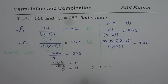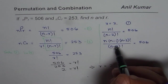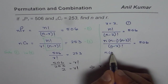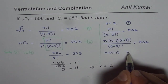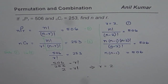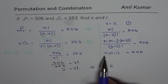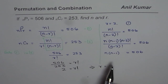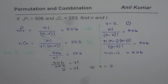N minus 2 factorial cancels, so we are left with N times N minus 1 equals 506. So 506 is N times N minus 1 — that is two consecutive numbers when multiplied gives you 506, and you could find the answer.